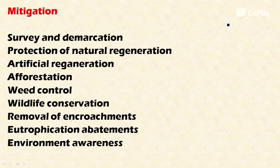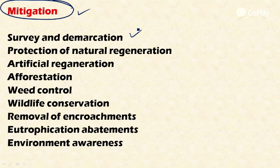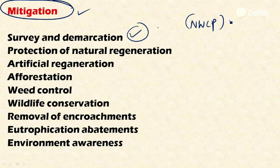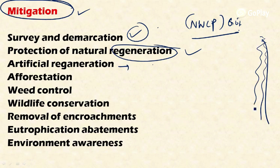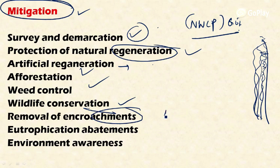To mitigate wetland destruction, we should survey and demarcate important wetland areas. The National Wetland Conservation Programme of the Government of India is doing this work. Protecting natural regeneration allows wetlands to self-sustain and grow. Artificial regeneration — for example, planting mangrove seedlings in coastal belts — also creates and restores wetlands.